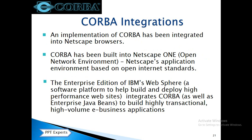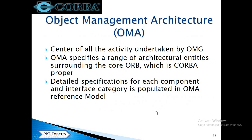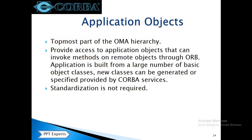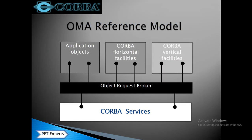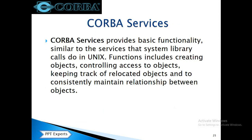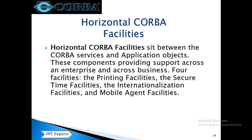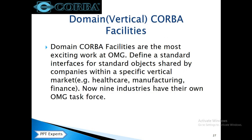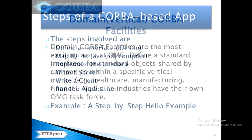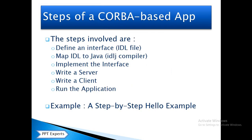CORBA integrations: CORBA is integrated in Netscape browser and IBM web software, which are used for transactional and high e-business applications. OMA is Object Management Architecture. The topmost layer consists of application objects, CORBA horizontal facilities, and vertical facilities. CORBA services is the library for calling and relocating objects. Horizontal facilities provide printing facilities, secure time facilities, interpolation facilities, etc. Domain vertical CORBA facilities provide healthcare, manufacturing, and finance components.